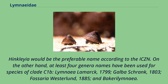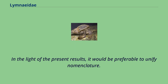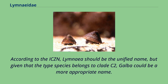On the other hand, at least four genus names have been used for species of clade C1b: Limnia Lamarck, 1799; Galba Schrank, 1803; Fosseria Westerland, 1885; and Bakery Limnia. In the light of the present results, it would be preferable to unify nomenclature. According to the ICZN, Limnia should be the unified name, but given that the type species belongs to clade C2, Galba could be a more appropriate name.